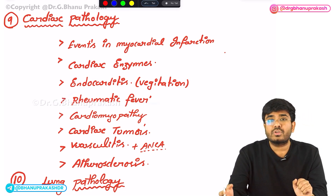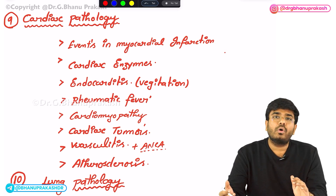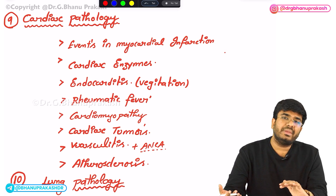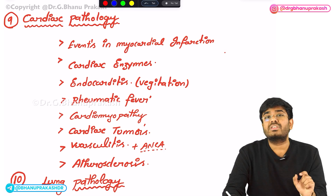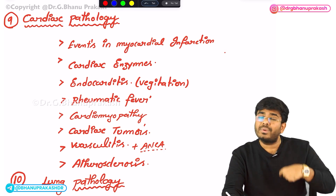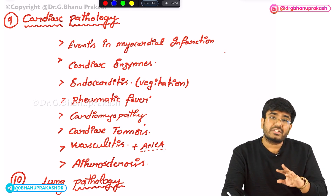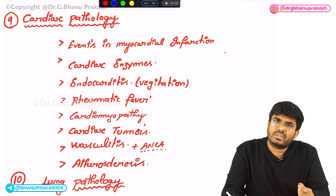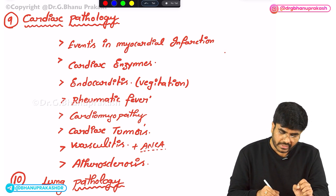Rheumatic fever, along with Jones criteria — know the major and minor criteria. You have to know about the concept of molecular mimicry: how group A beta-hemolytic streptococcus, due to the presence of N-acetylglucosamine in human cells, has a similar structure to the M-protein on group A beta-hemolytic streptococcus. That concept of molecular mimicry you should know before going to the exam.